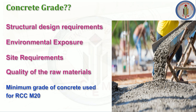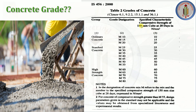The minimum grade of concrete used for reinforced concrete structures is M20. In IS 456:2000, Table 2, grades of concrete are categorized into three types: ordinary concrete (M10, M15, M20), standard concrete (M25 to M55), and high strength concrete (M60 to M80). M20 is the minimum grade of concrete required for RCC construction.